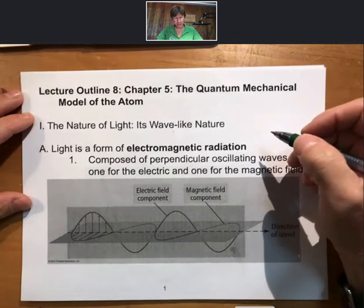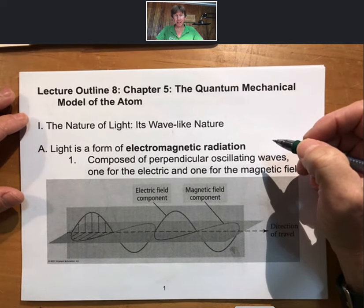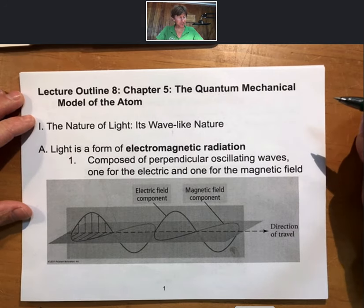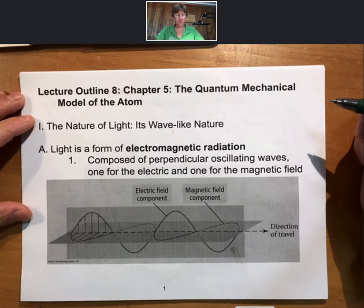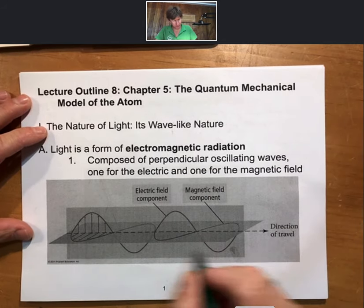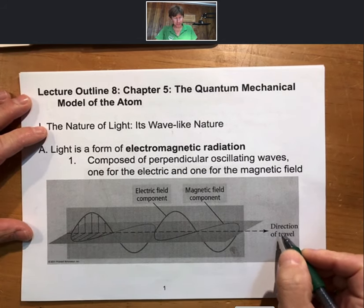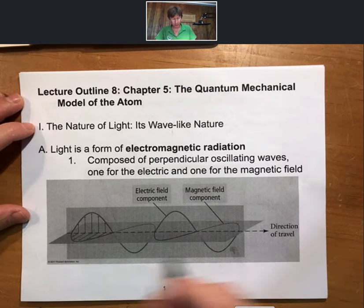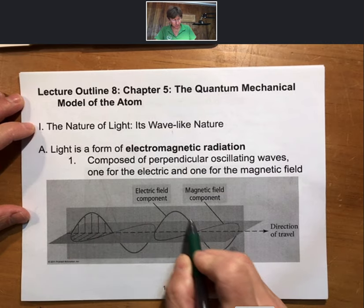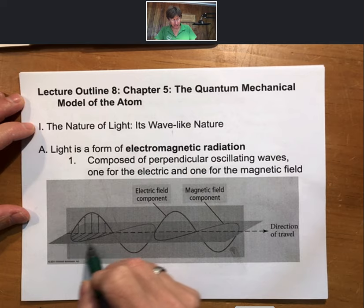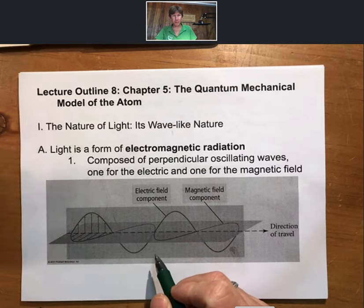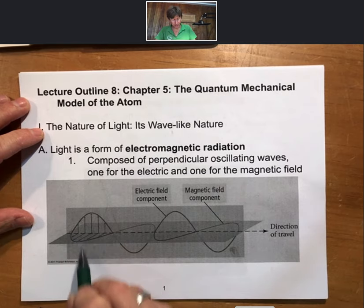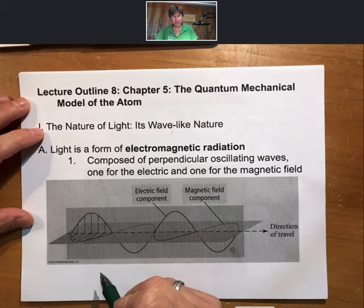Light is a form of electromagnetic radiation that travels as a wave. It is composed of perpendicular oscillating waves, one for the electric and one for the magnetic field. And so the direction of travel is to the right, and perpendicular to that, also sometimes called orthogonal, are an electric field component and a magnetic field component. So there are three directions. The light is traveling to the right, the plane of the electric field is up and down, and the magnetic field is perpendicular to that.